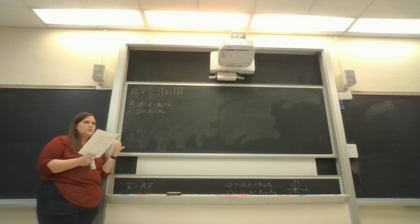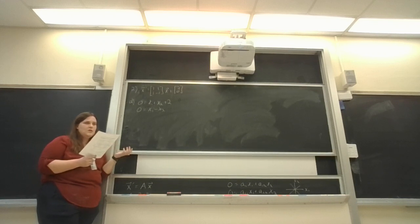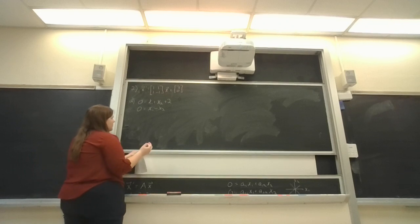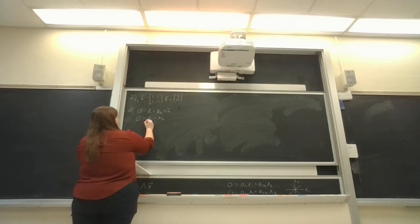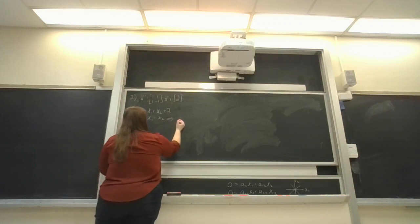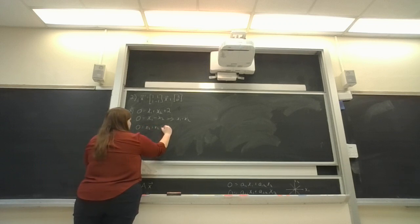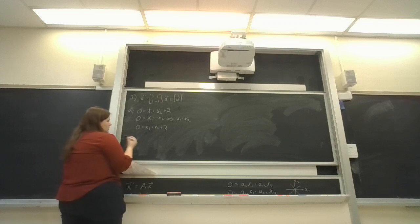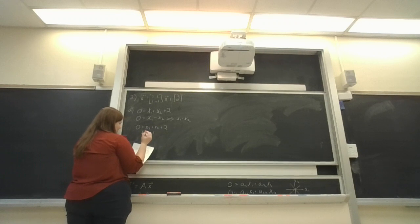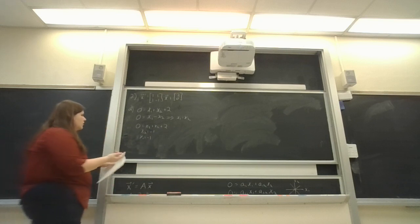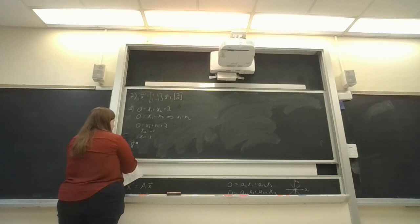This is a system with two equations and two unknowns. Are we going to be able to solve for x₁ and x₂? Yeah, we're going to be able to do it pretty easily. I can take this second equation and that gives me x₁ equals x₂, right? Plug it into my other one: zero equals x₂ plus x₂ plus two. Solving for x₂, I get x₂ equals negative one, which also means that x₁ equals negative one. So my equilibrium value for x* is the vector (-1, -1).